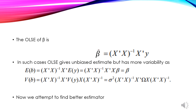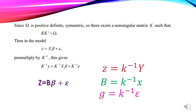Then we have the Generalized Least Squares estimator. Since omega is positive definite symmetric, there exists a non-singular matrix K such that K'K = Ω. We define the model as Y = Xβ + ε, and pre-multiply both sides by K⁻¹, giving K⁻¹Y = K⁻¹Xβ + K⁻¹ε.